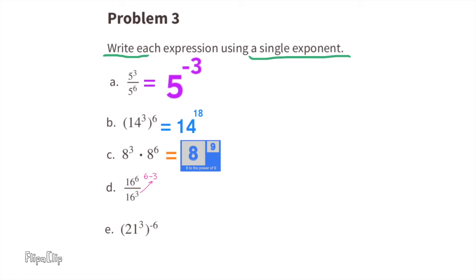Expression d: 16 to the power of 6 over 16 to the power of 3. That's the same as 16 to the power of 6 divided by 16 to the power of 3. We need to subtract the exponents. Since 6 minus 3 is 3, we have 16 to the power of 3. Expression e: inside the parentheses we have 21 to the power of 3, and on the outside of the parentheses we have the power of negative 6. We can multiply these exponents: 3 times negative 6 is negative 18, so we have 21 to the power of negative 18.